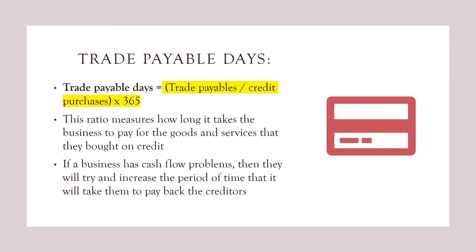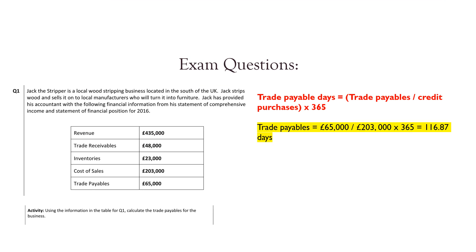Trade payable days. Trade payable days is trade payables divided by credit purchases times by 365. This ratio measures how long it takes a business to pay for the goods and services bought on credit. If a business has cash flow problems, they will try to increase the period of time it takes to pay back the creditors. Looking at the same data, the trade payables are £65,000 and credit purchases are £20,000 and £3,000. If you cannot find credit purchases, you can use purchases or cost of sales. Times by 365, which means the trade payable days is 116.87 days.